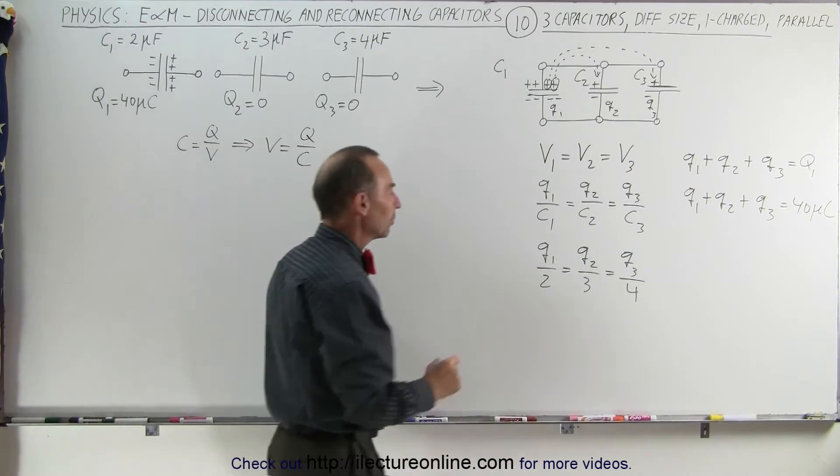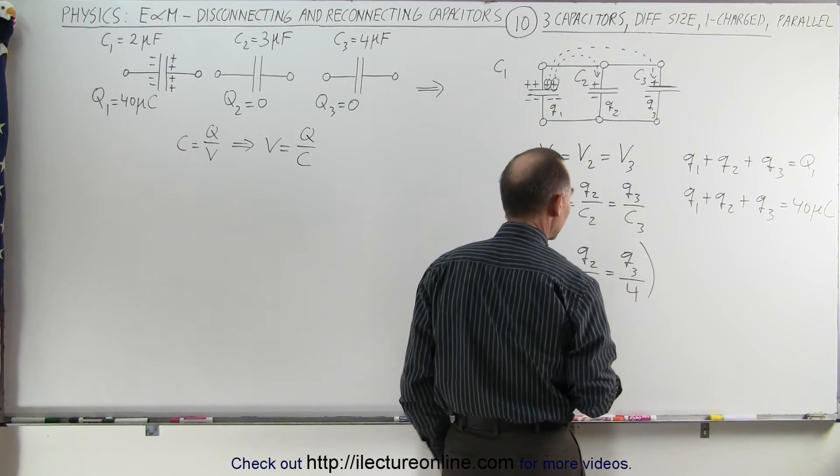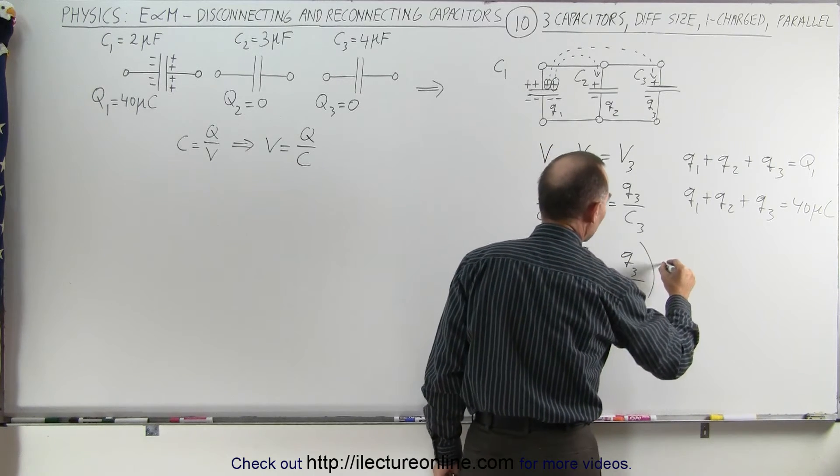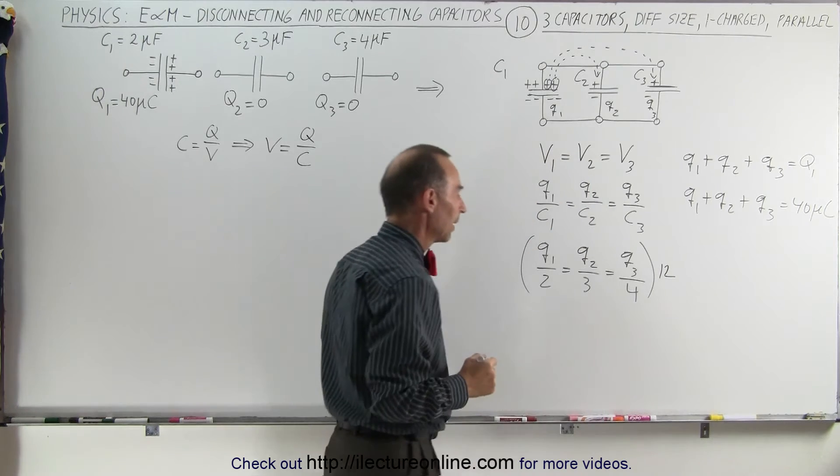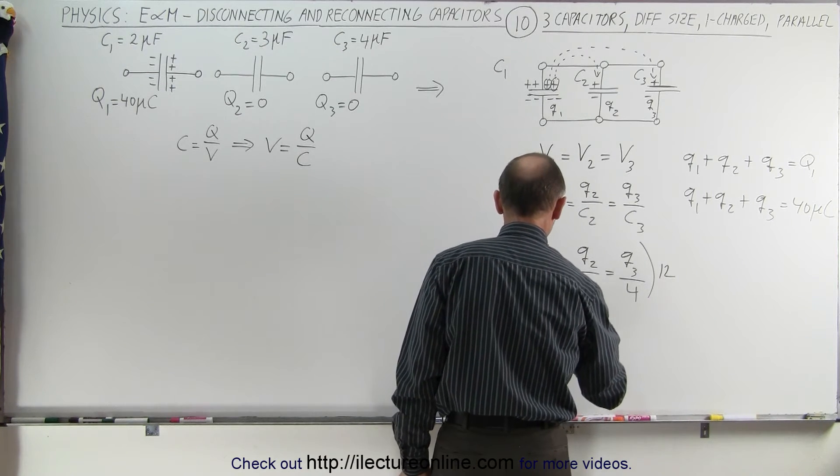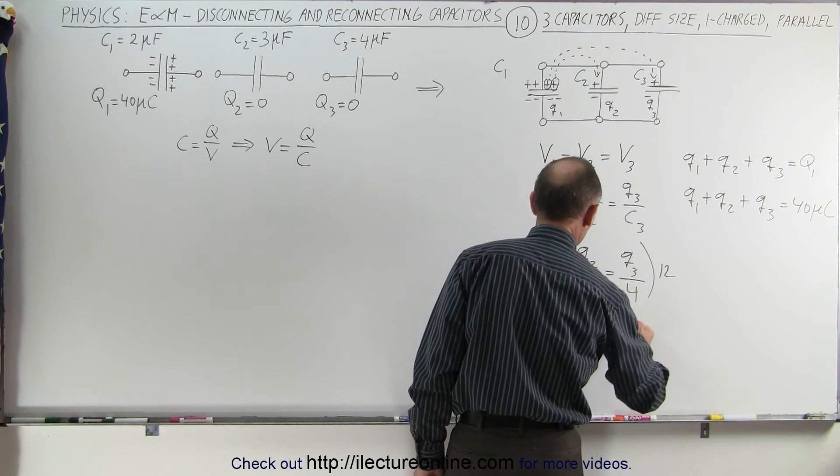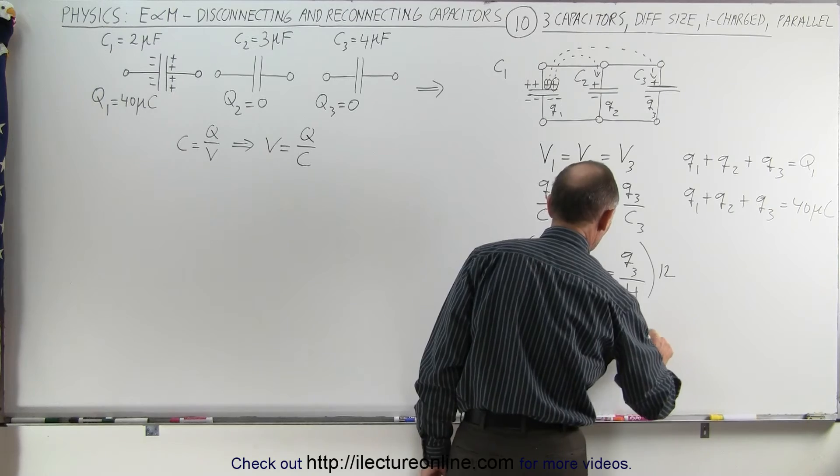Now what we're going to do is we're going to take this here and multiply all three fractions by the lowest common denominator which in this case is 12. If we do that we get the following: we get 6q1 is equal to 4q2 which is equal to 3q3.